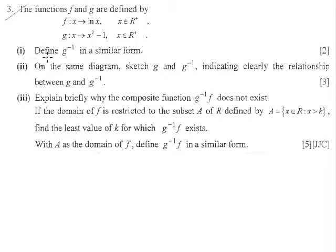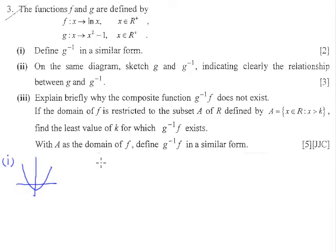For this question, we're supposed to find the inverse of g for the first part. The first thing we notice is that g(x) itself is a quadratic equation, and we know that quadratic equations are not one-to-one. This graph looks like y = x² - 1, shifted down by one. However, because the domain is restricted to all positive real values, the graph is only on the right side, making it one-to-one, and therefore the inverse of g can exist.